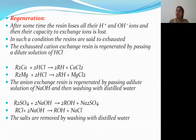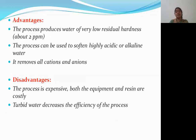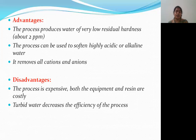Finally, the advantages and disadvantages of the ion exchange process. Advantages: this process produces water with very low residual hardness of about 2 ppm; it can be used to soften highly acidic or alkaline water; and it removes both anions and cations. Disadvantages: the process is expensive because the resins are costly, and turbid water decreases the efficiency of the process.